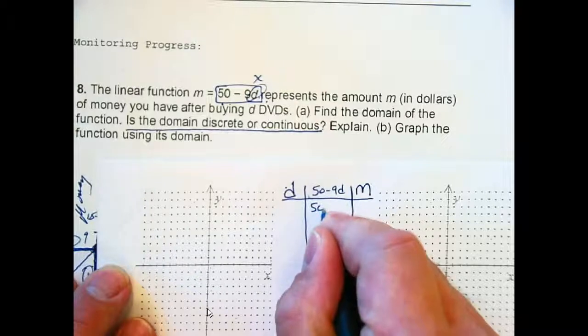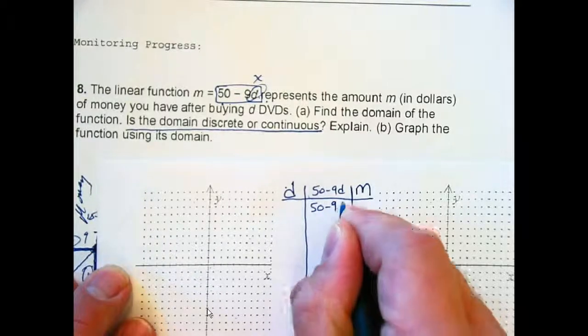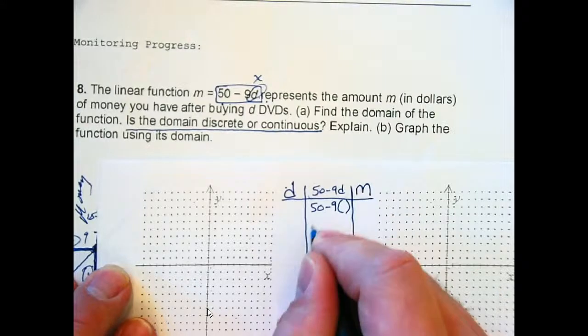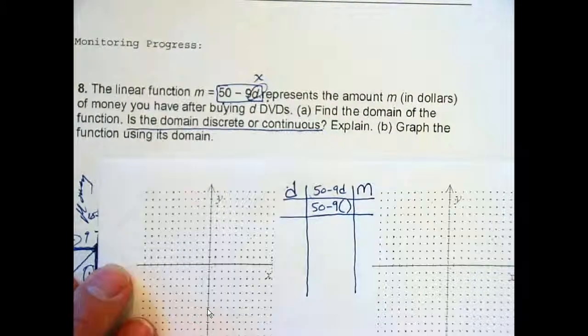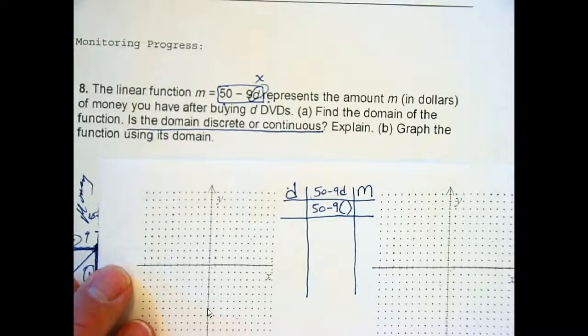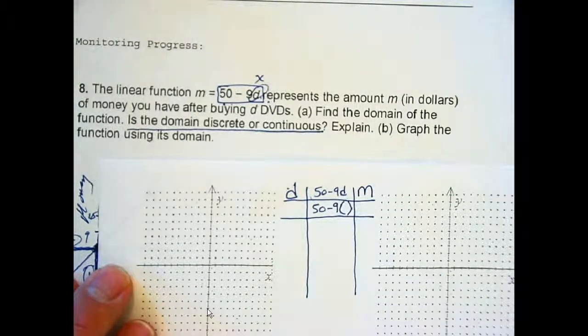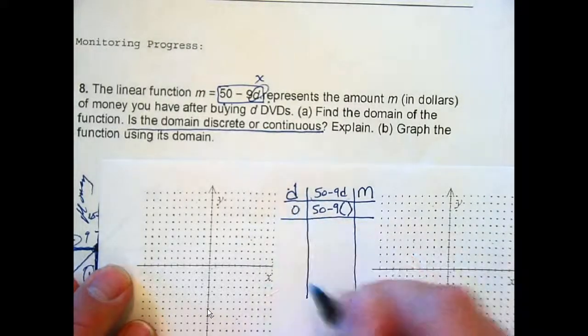This little expression. 50 minus 9D. That's what we're doing to our input. So, when we put in a value for D, we get an output of M. Okay? Well, how many DVDs could you buy?